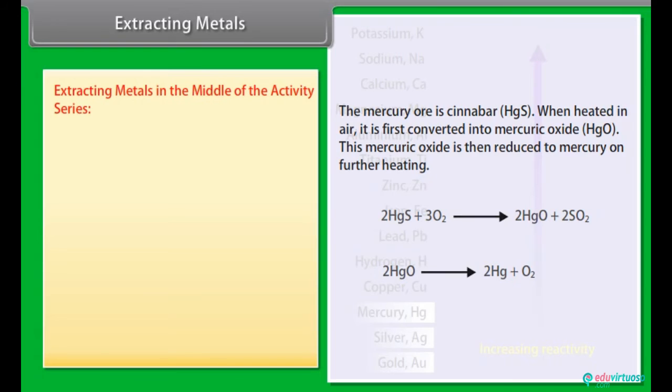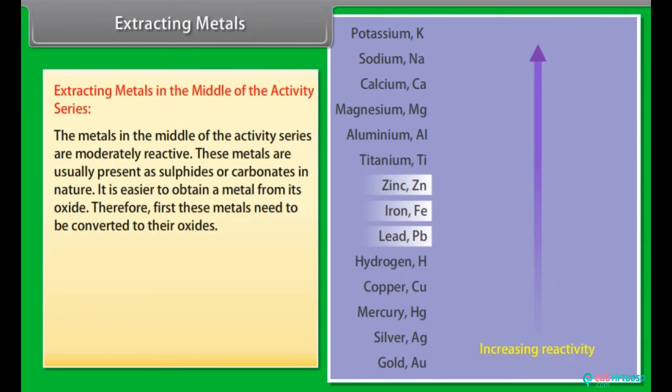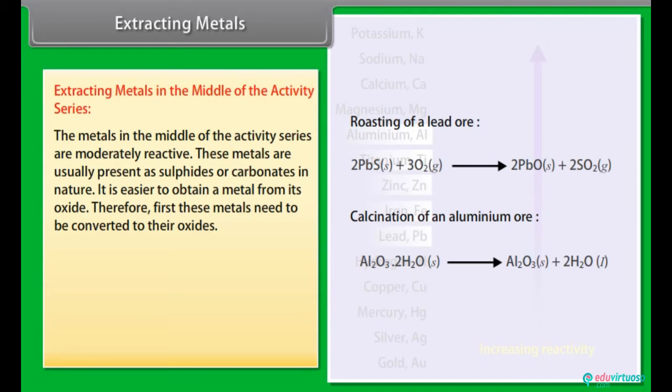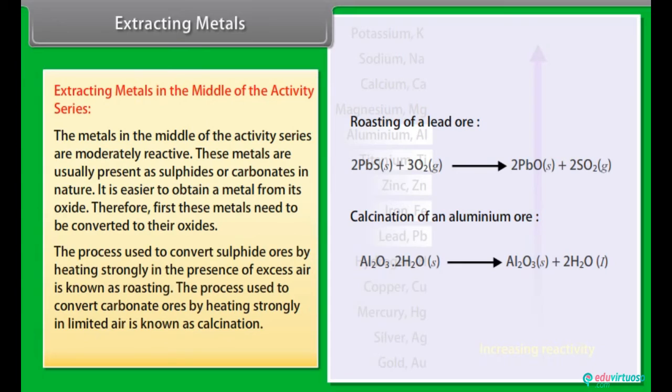Extracting metals in the middle of the activity series. The metals in the middle of the activity series are moderately reactive. These metals are usually present as sulphides or carbonates in nature. It is easier to obtain a metal from its oxide. Therefore, first these metals need to be converted to their oxides. The process used to convert sulphide ores by heating strongly in the presence of excess air is known as roasting. The process used to convert carbonate ores by heating strongly in limited air is known as calcination.